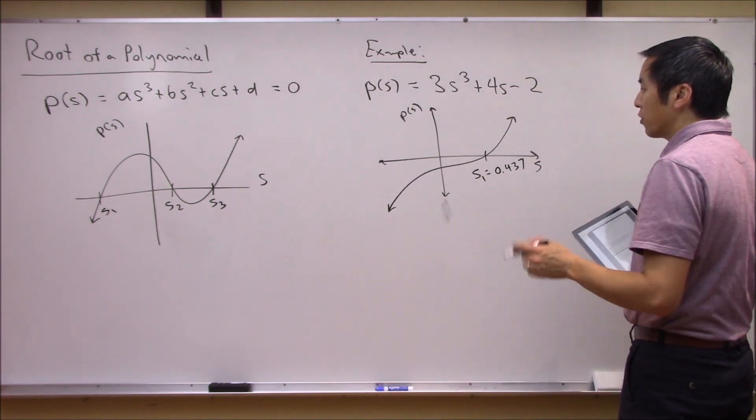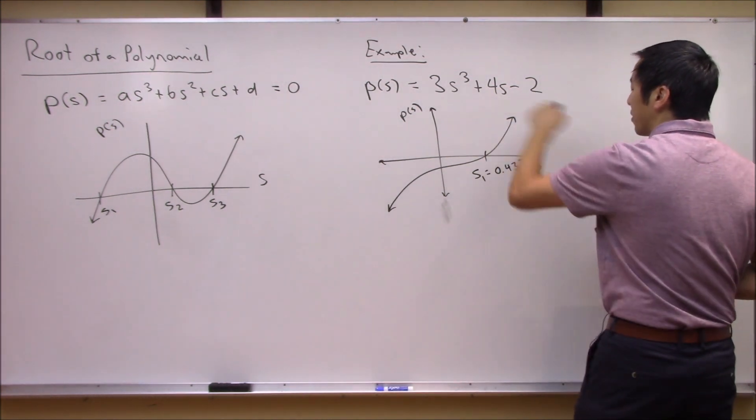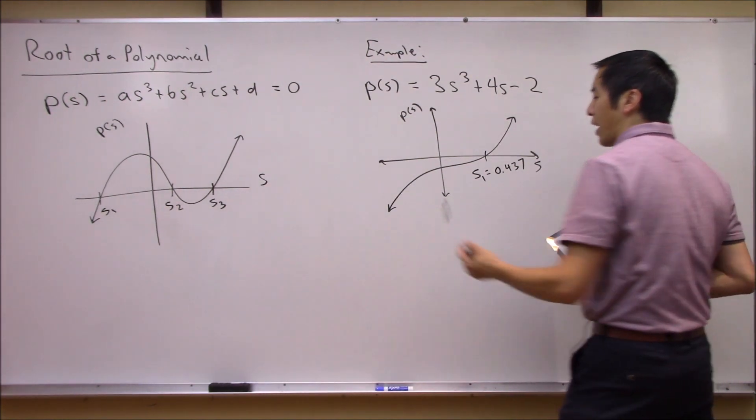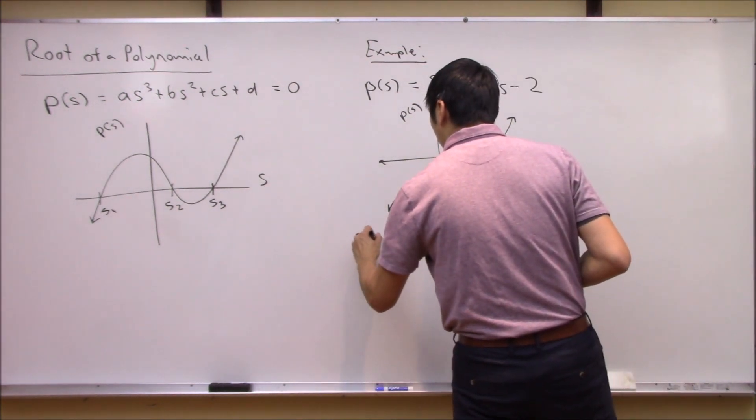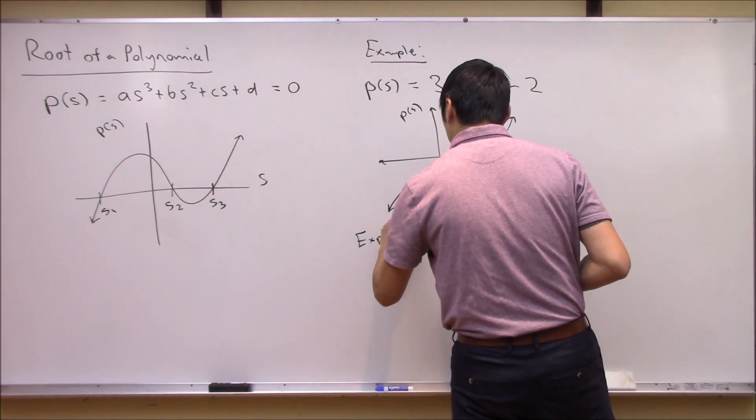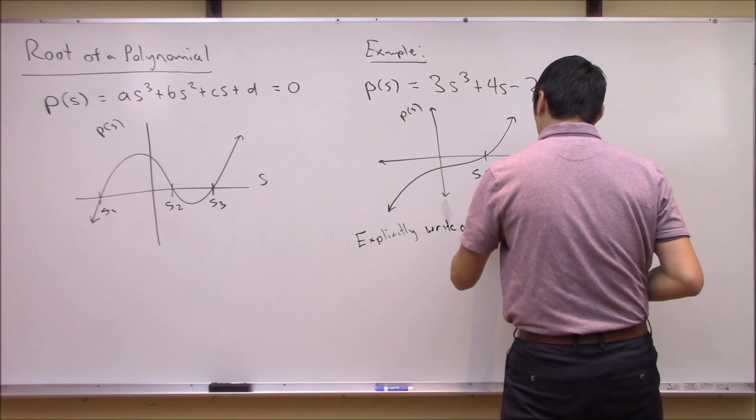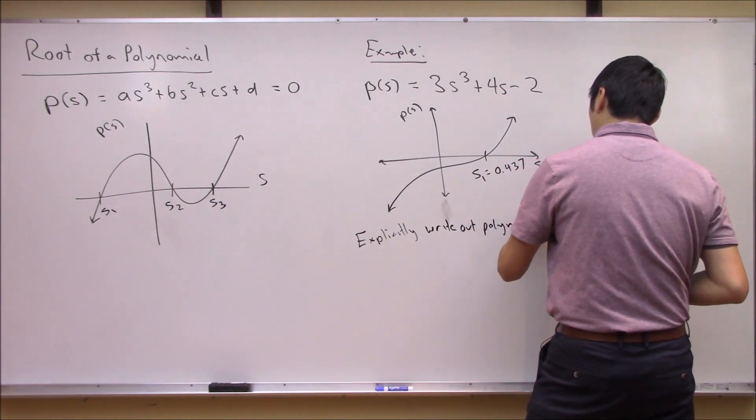So to do this numerically, the first thing we're going to want to do is let's explicitly write out your polynomial in sort of descending powers of s.